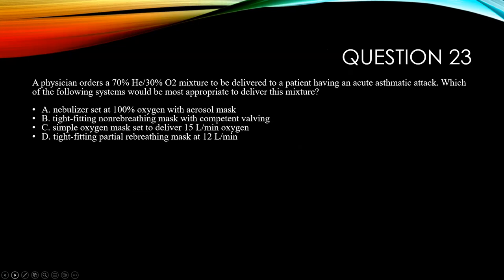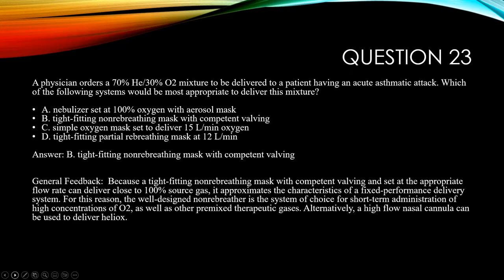Question twenty-three: a physician orders 70/30 heliox to be delivered to a patient in acute status asthmaticus. Which delivery system would be most appropriate? Options: a nebulizer with 100% O2 aerosol mask, a tight-fitting non-rebreather mask with competent valving, a simple oxygen mask at 15 L/min, or a tight-fitting partial rebreather at 12 L/min. The correct answer is a tight-fitting non-rebreather with competent valving. Because heliox is a thin gas, competent valving minimizes loss of the gas. A well-designed non-rebreather can deliver close to 100% of the gas source, approximating a fixed-performance delivery system.